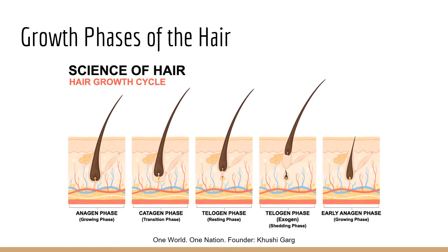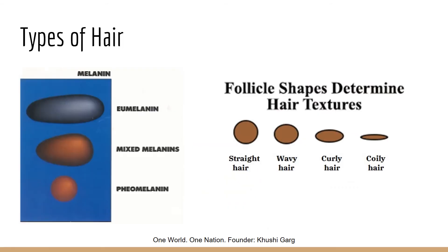The timings I discussed — two to six years, one to two weeks, three months — are for the hair on your head. Hair in other places, such as your arms or legs, has different timings. The timings of all hair vary per person because they are largely genetic.